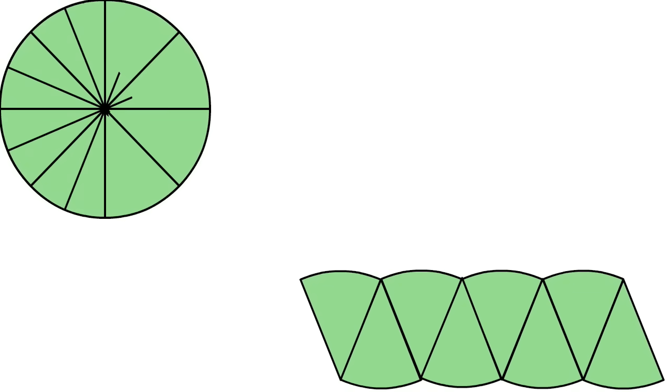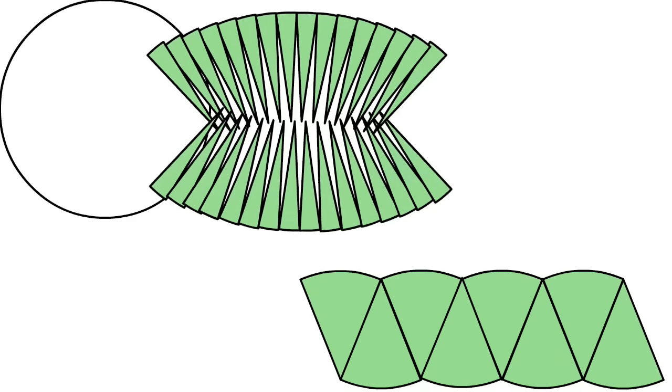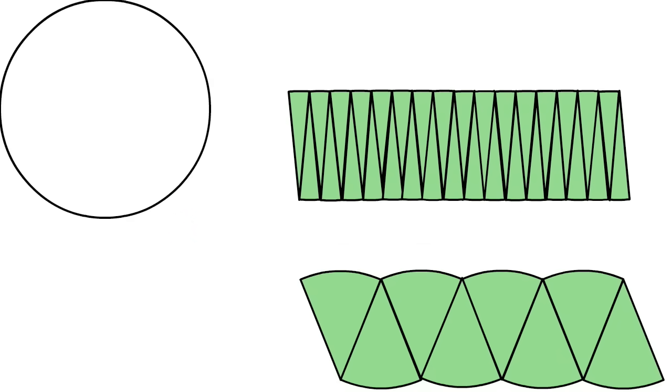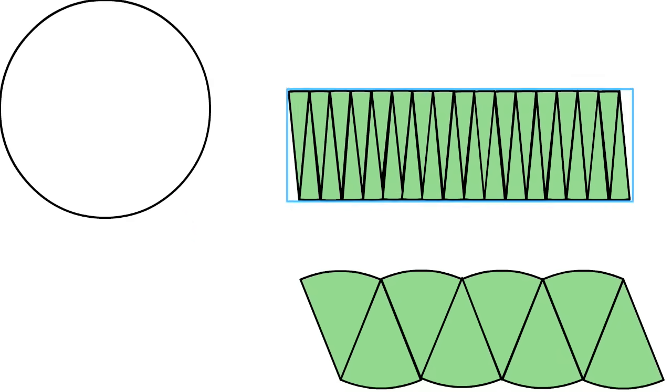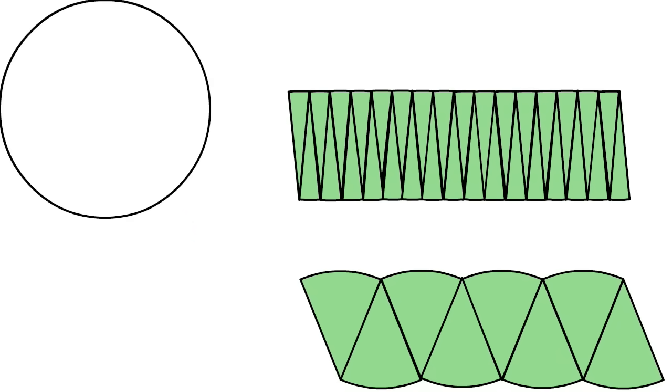So next we will divide the circle into smaller equal pieces and arrange them in the same manner. You can see that it appears more like a rectangle.